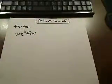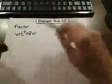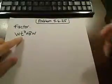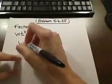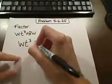So this is problem 5.6.25. We're asked to factor, and this is w times t cubed plus 8w. I don't think you can see that very well, so I'm going to write it a little bigger there.